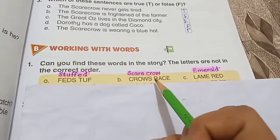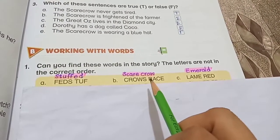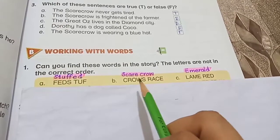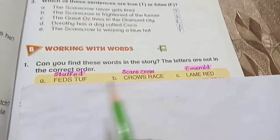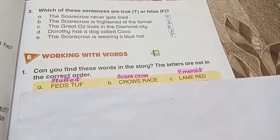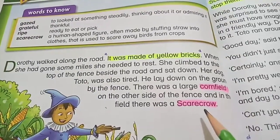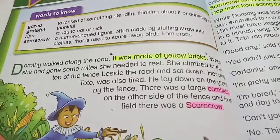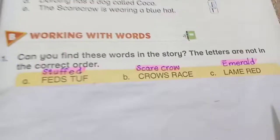The second word is: c-r-o-w-s-r-a-c-e. This is 'scarecrow.' You have read this word in the story many times. In the reading, in the heading of this chapter, you can also find the word scarecrow, and in the first paragraph you find the word scarecrow as well. So this word you have read in the story.